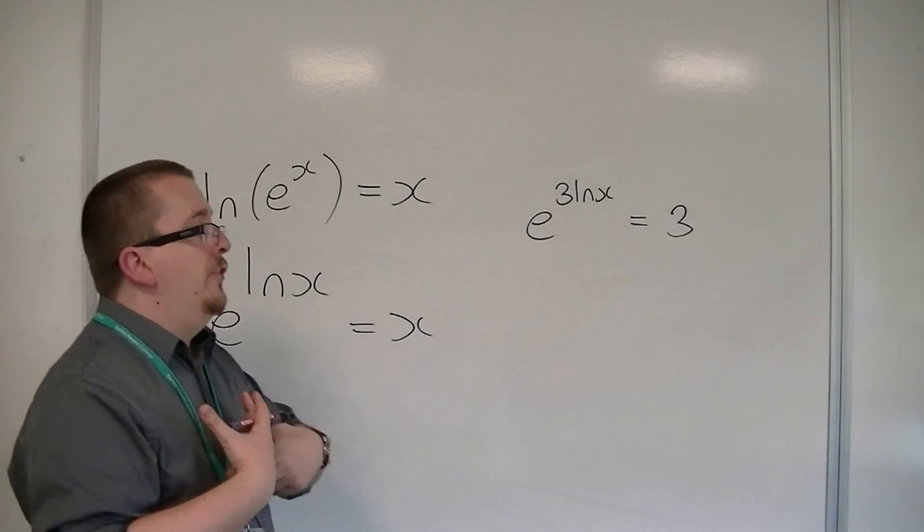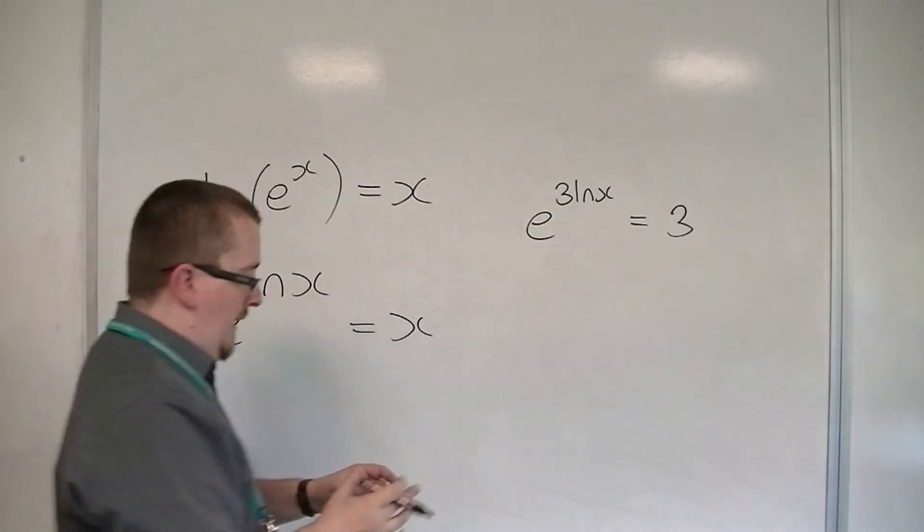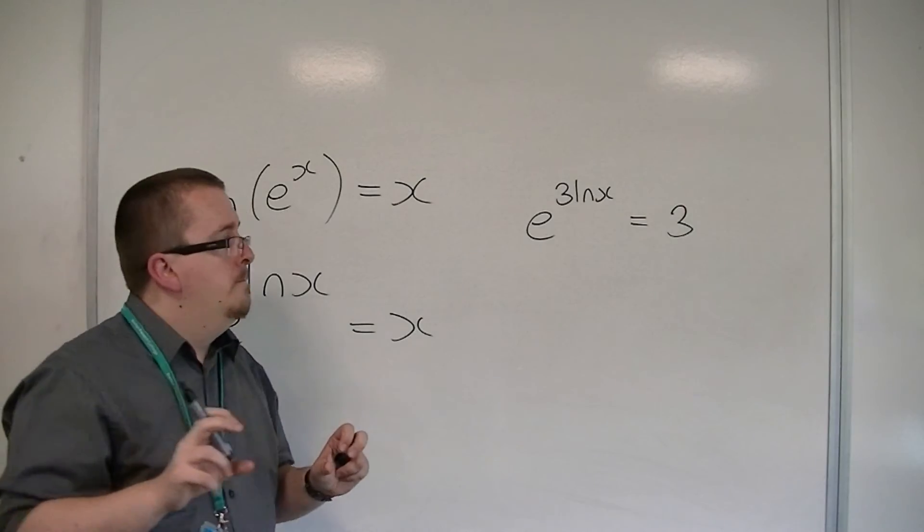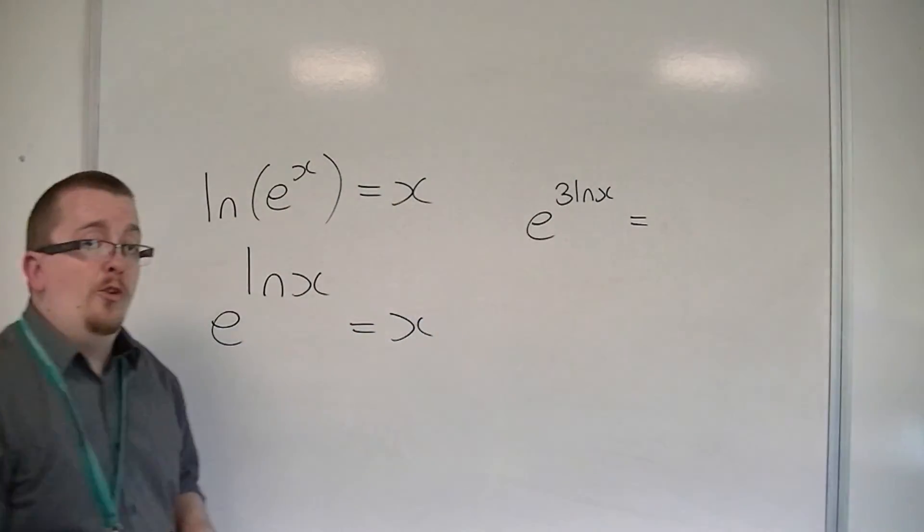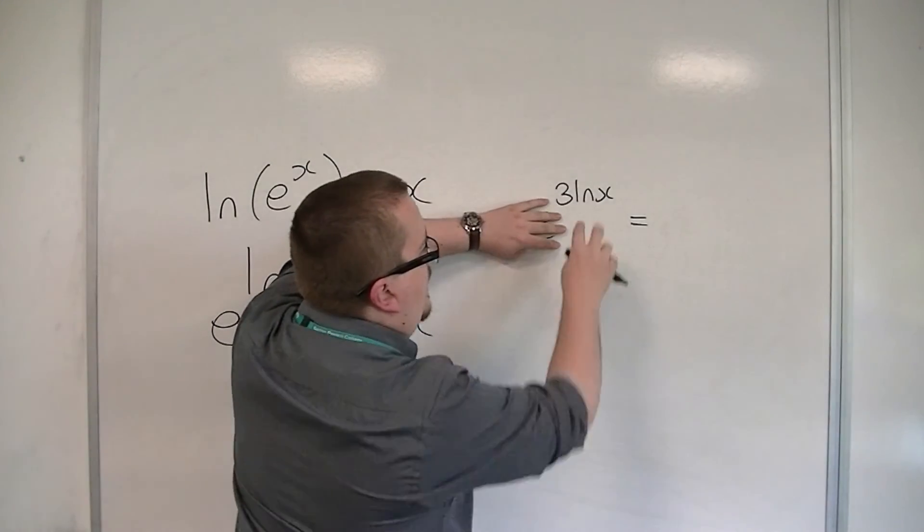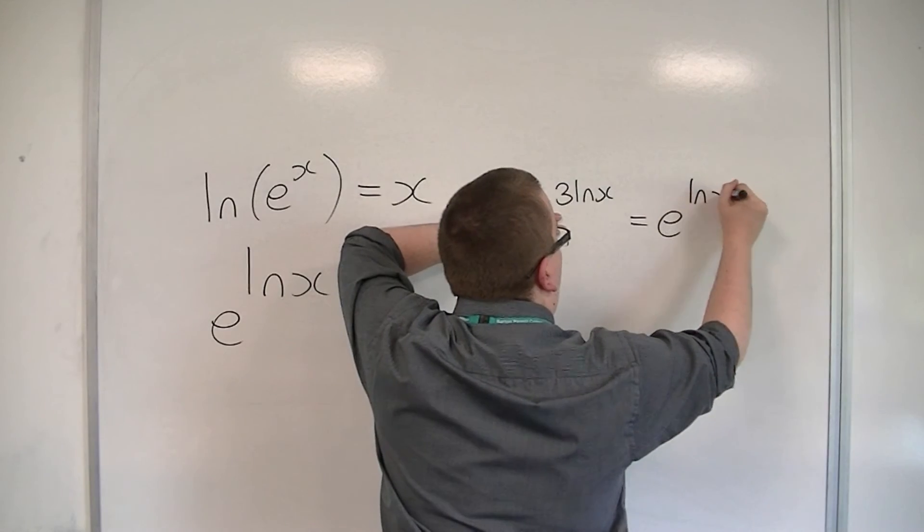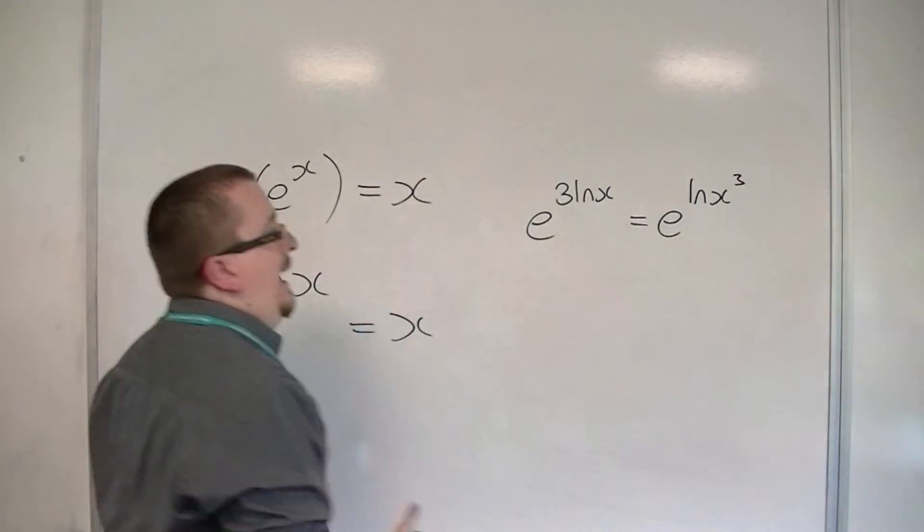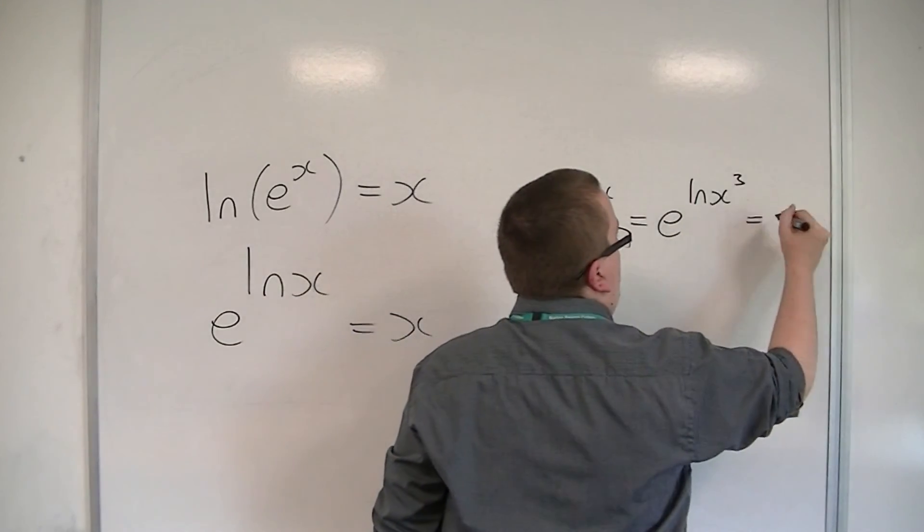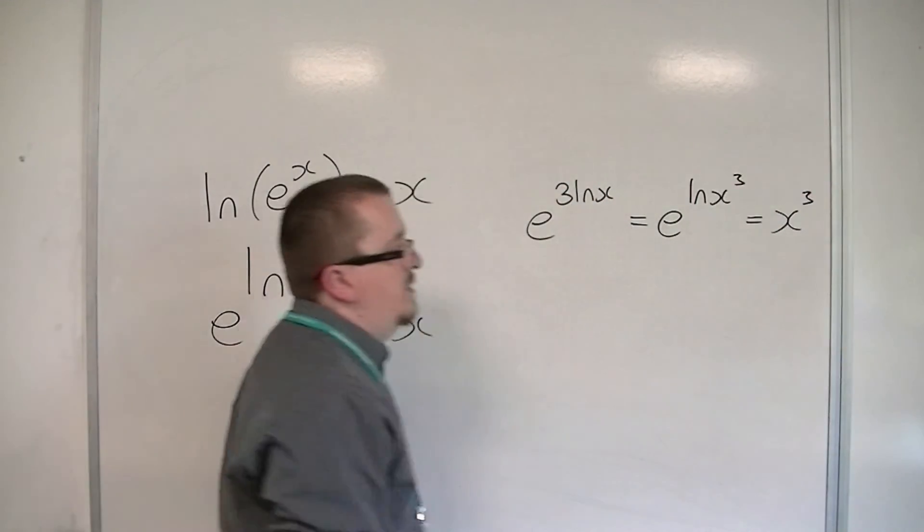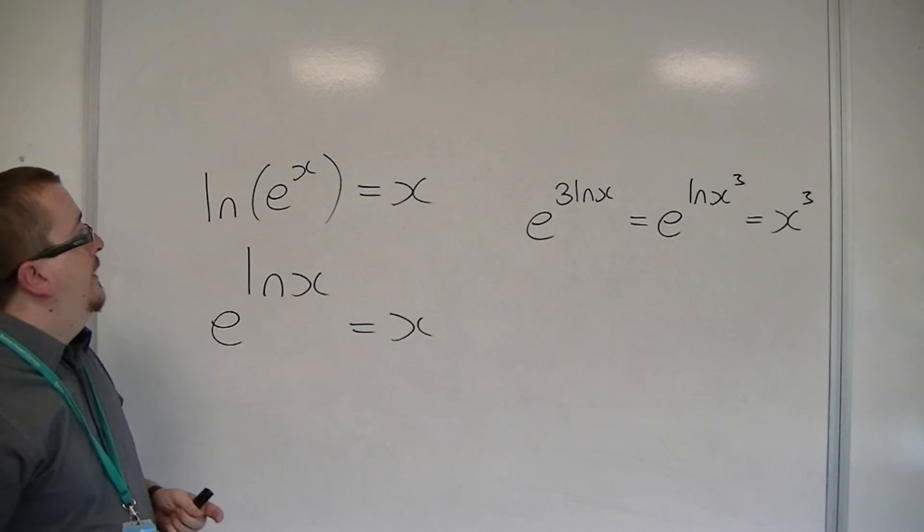But what you've got to understand is that we have to have the e and the log effectively next to each other. So we're going to perform the log law first. Just ignore the e and have 3 log x. So this is the same as e to the log of x cubed. And now that the e and the log are next to each other, this would just be x cubed. So that is how we can do this.